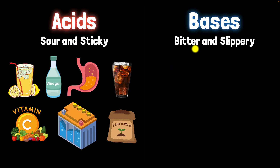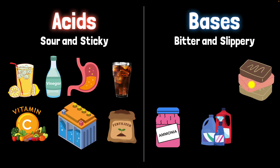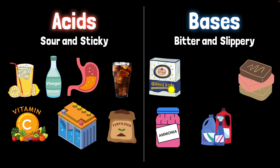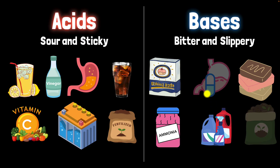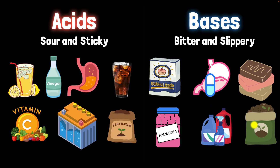What about bases? Bitter and slippery — what comes to your mind? Soaps, detergents, and ammonia are all quite slippery and bitter as well. But please don't test them. Baking soda is pretty bitter. And there are other examples like antacids, and there are other kinds of fertilizers that have bases in them.